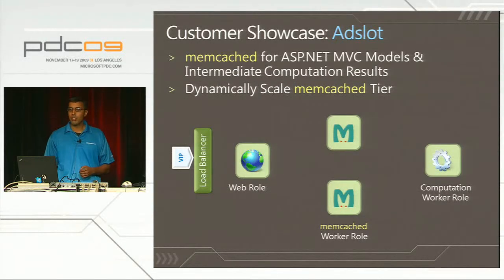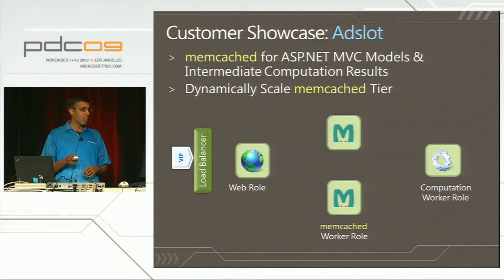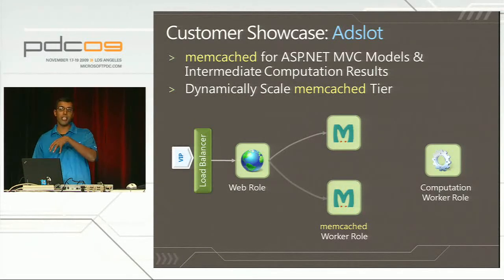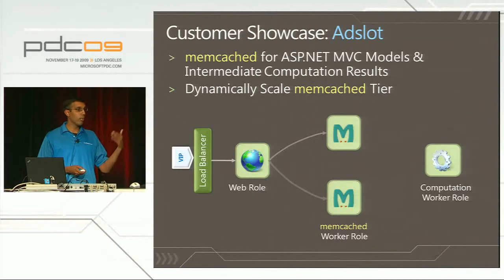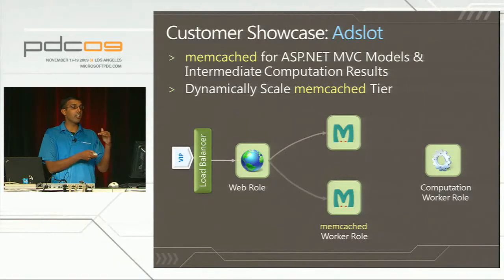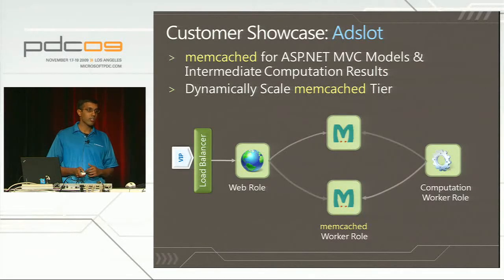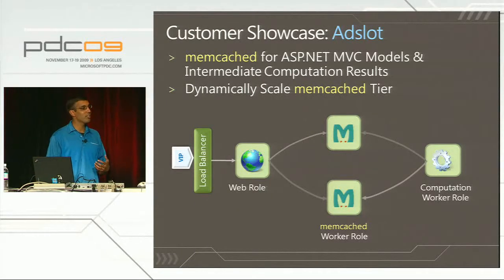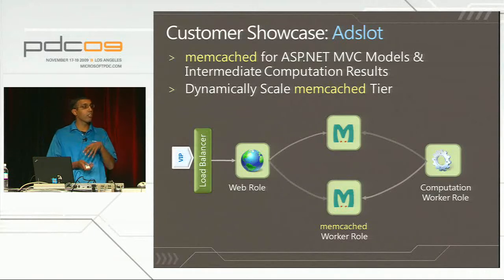AdSlot is using Memcached in a few interesting ways. First, they're using it to store their ASP.NET MVC models. By moving their model cache from the local instance to a dedicated caching tier, they can load balance traffic on their web tier without any need for affinity, optimizing utilization by externalizing the cache. In addition, they're using Memcached to store intermediate computation results - similar to memoizing in computer science. Subsequent computations take advantage of earlier results, saving recomputation. In both cases, they need to scale the Memcached tier up and down based on load, as they run auctions at certain times of the year.